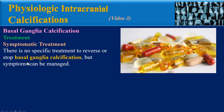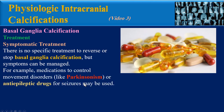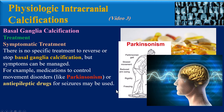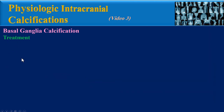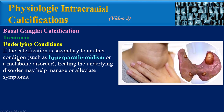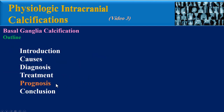Regarding treatment, there is no specific treatment to reverse or stop basal ganglia calcification, but symptoms can be managed. For example, medications to control movement disorders like parkinsonism, or anti-epileptic drugs for seizures, may be used. If the calcification is secondary to another condition such as hyperparathyroidism or a metabolic disorder, treating the underlying disorder may help manage or alleviate symptoms.